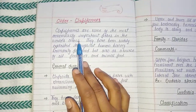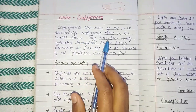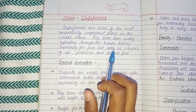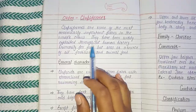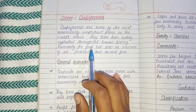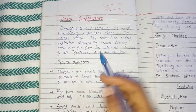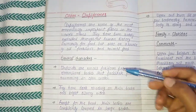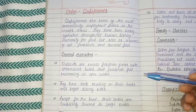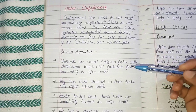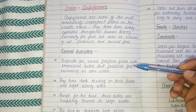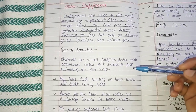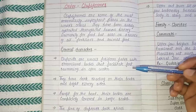Clupeiformes are some of the most economically important fishes in the world's oceans. They have been widely exploited throughout human history. Here are some general characters of Clupeiformes: clupeoids are small fusiform fishes with streamlined bodies that facilitate fast swimming in open water.